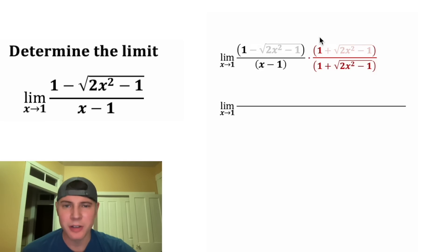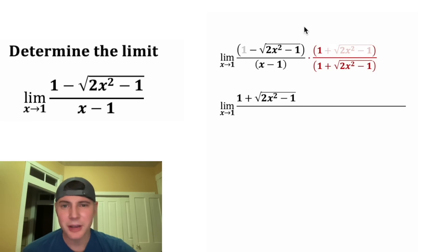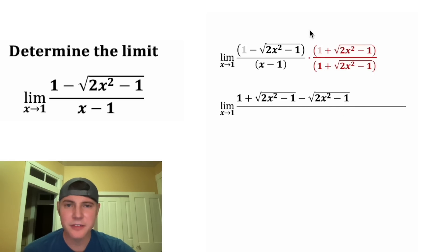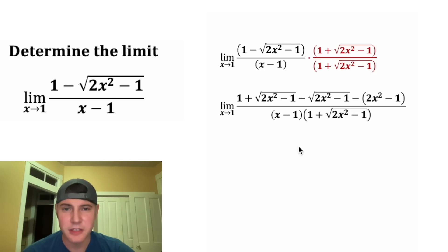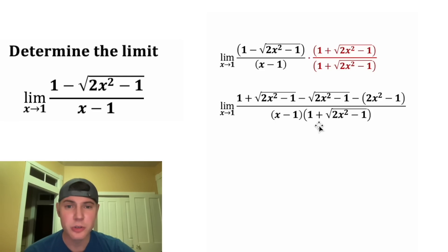Now let's FOIL the numerator. 1 times 1 is 1. 1 times positive square root of (2x²−1) is positive that square root. 1 times negative square root of (2x²−1) is negative that square root. For the last term, negative times positive gives a negative, and the square root of (2x²−1) times itself is just 2x²−1. On the bottom, we leave the factors as is — you'll see why in a moment.